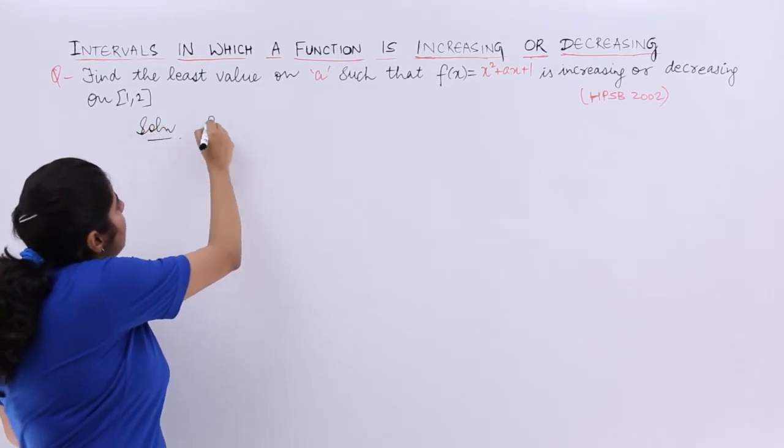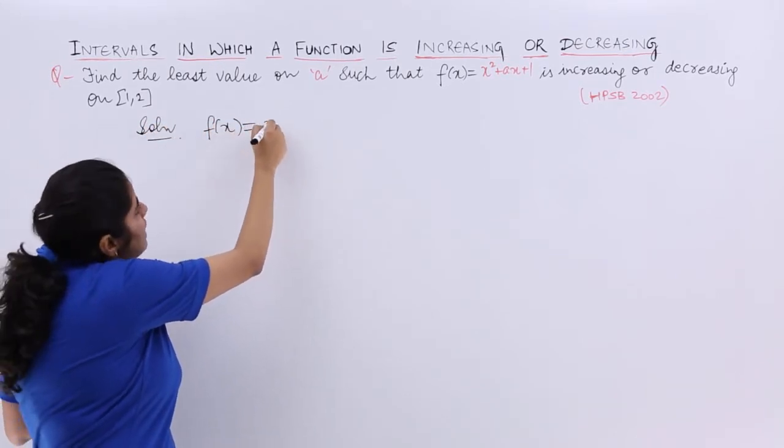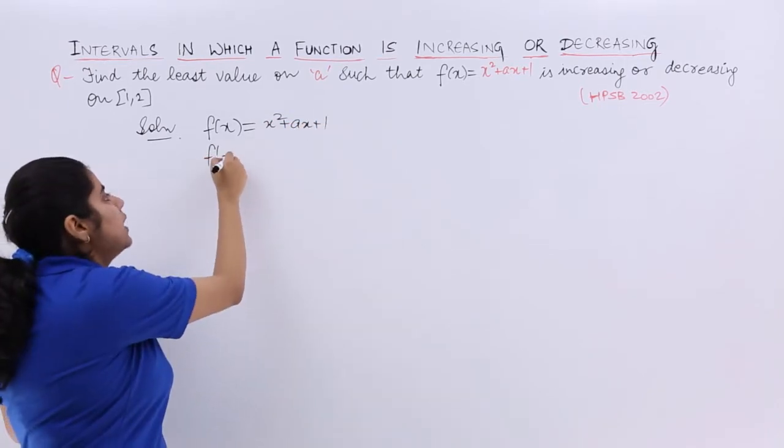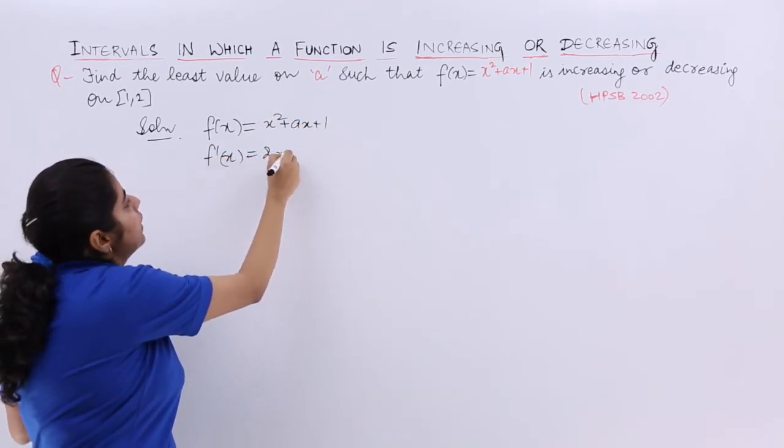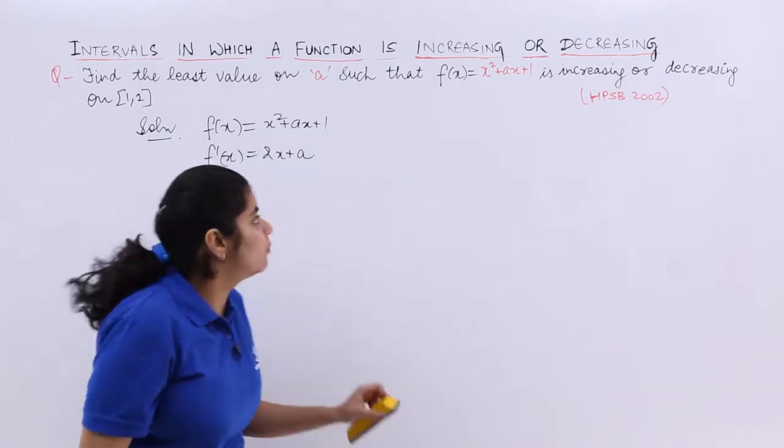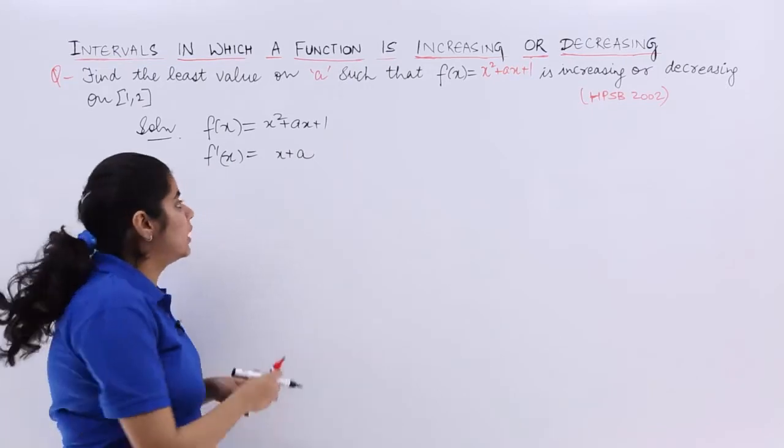So I write the solution: my f(x) is given as x² + ax + 1. I need to find f'(x), which is simply 2x + a. Let me write 2 more clearly. So it is simply 2x + a.